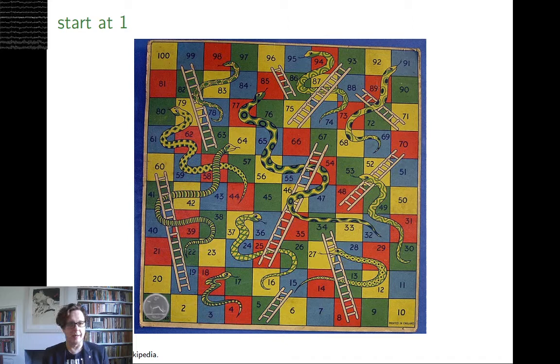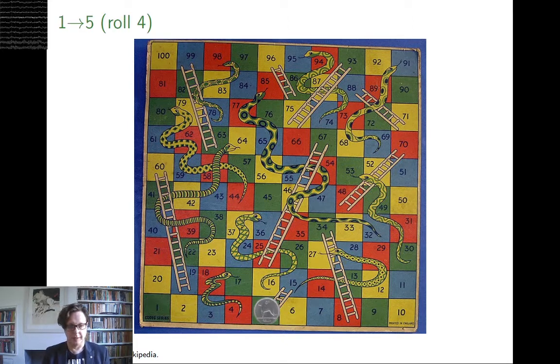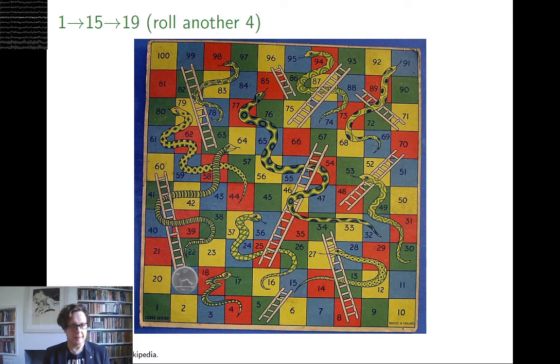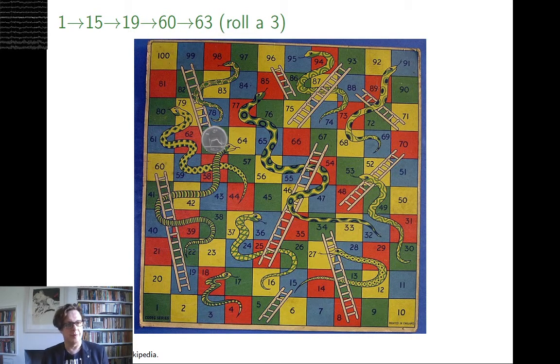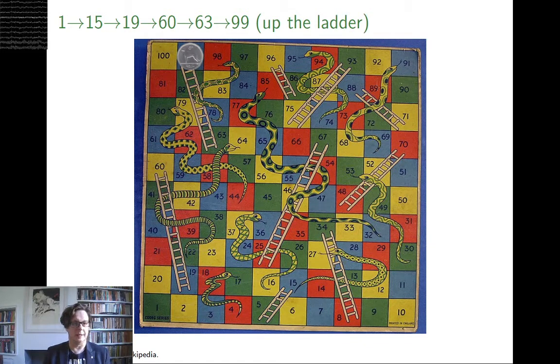Remarkably, on this particular board you can get to 99 in just three rolls. So if the first roll is a 4, you go from 1 to 5, you go up the ladder, then if the next roll is a 4, again you go up the ladder, and then if you roll a 3, you get to the top of the ladder, and you're there at 99.